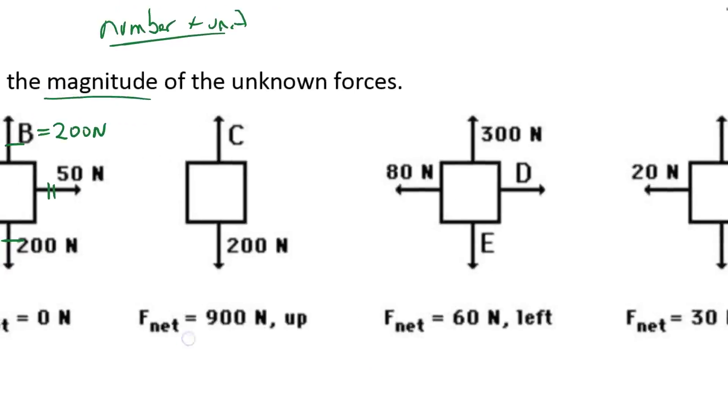Alright looking at C. The F net is equal to 900 newtons up. That means after these two are combined together I have 900 newtons up. Another way of saying this is the up force in this question must be 900 more than the down force. So this must be 1100 newtons upwards. For 1100 up and 200 down combined together would be 900 newtons up.